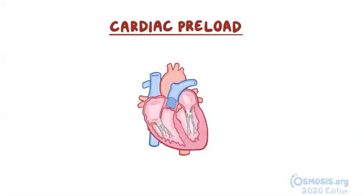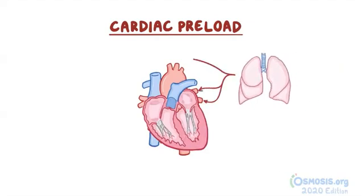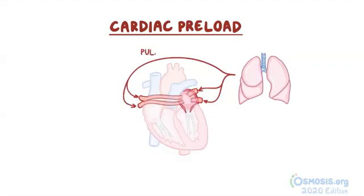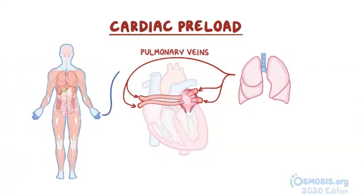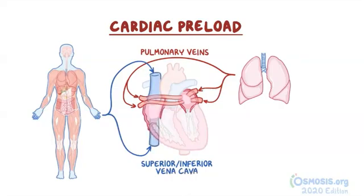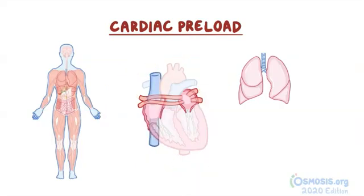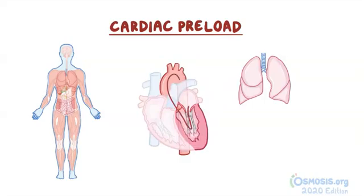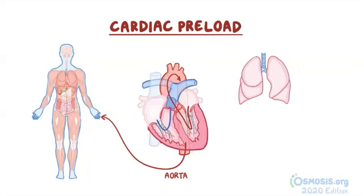The heart has two upper chambers: the left atrium, which receives oxygenated blood from the lungs via the pulmonary veins, and the right atrium, which receives deoxygenated blood from all organs and tissues via the superior and inferior vena cava. From the atria, blood flows into the lower chambers — the left ventricle, which pumps oxygenated blood to organs and tissues via the aorta, and the right ventricle, which pumps deoxygenated blood back to the lungs via the pulmonary arteries.